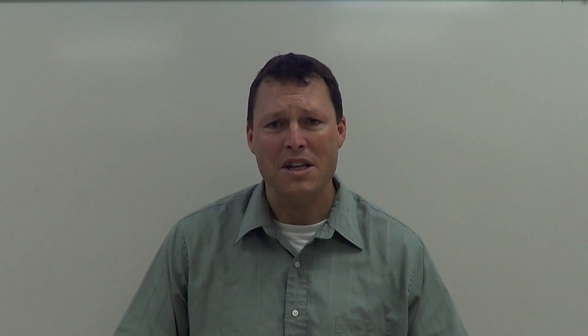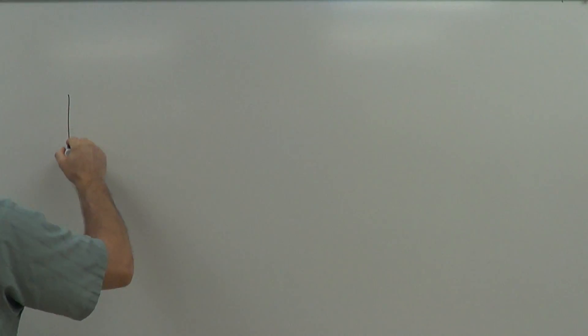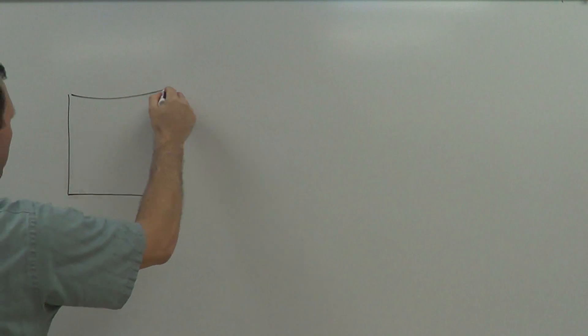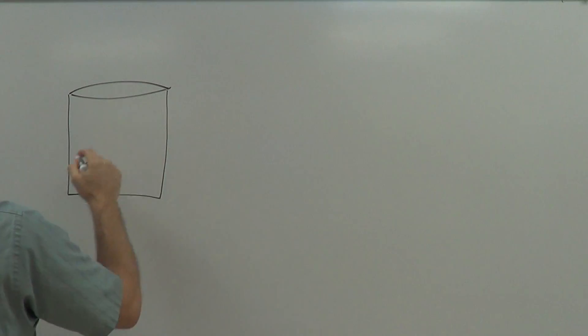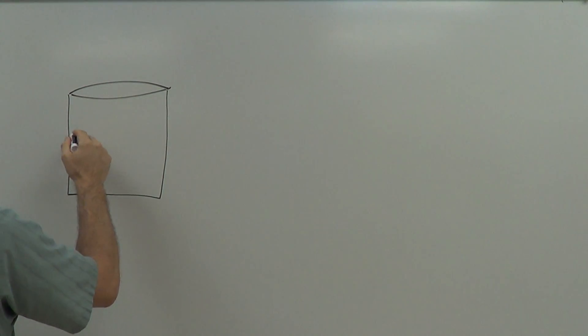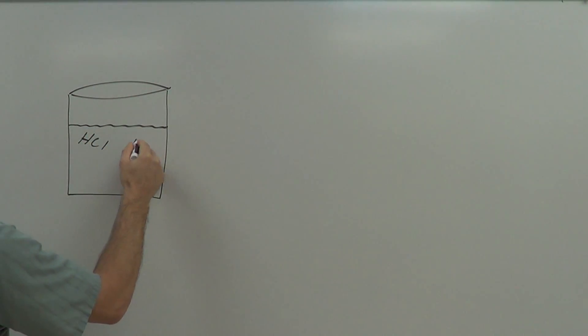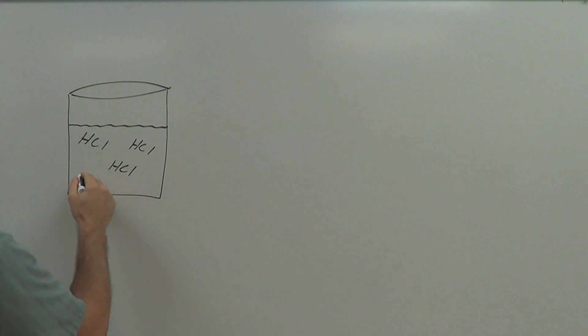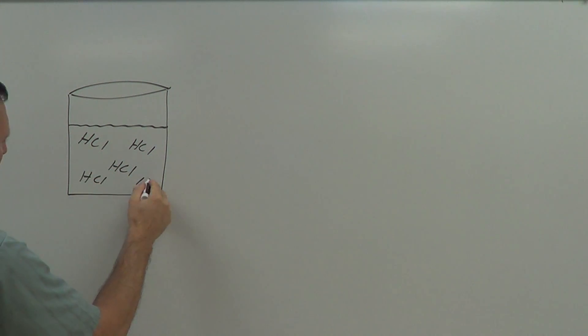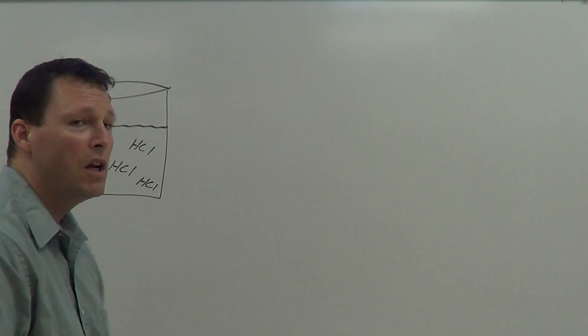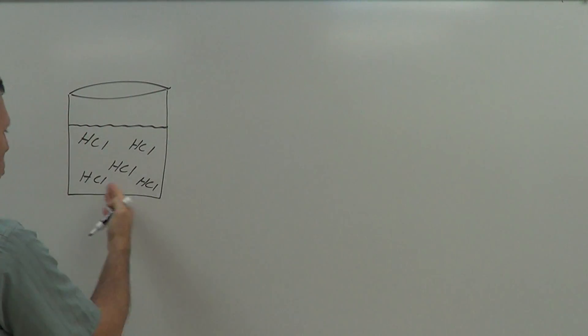Let's talk about what acids and bases actually are. I'm going to start with acids and draw a beaker. I'm going to fill this beaker with some hydrogen chloride — HCl. There are lots of hydrogen chloride molecules in here; I'll just draw five, but in real life there are gazillions of them floating around in this solution.